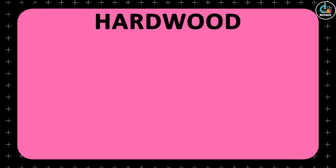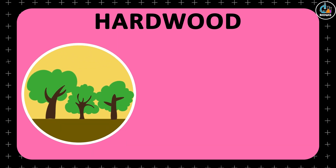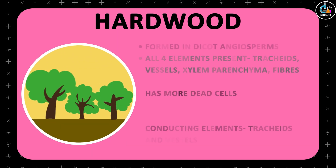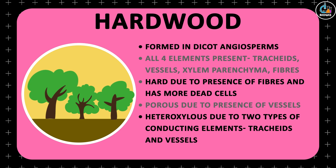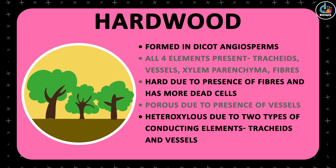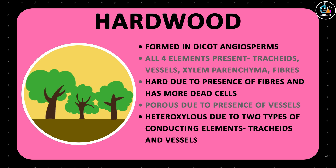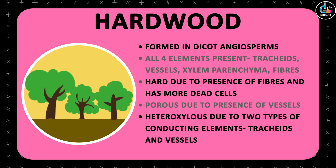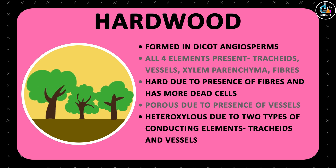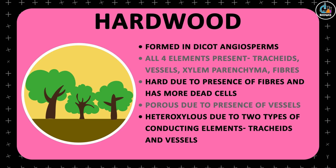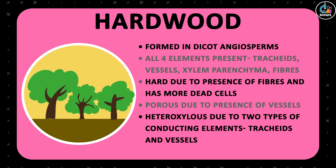In angiosperms, the wood contains all four types of elements: tracheids, vessels, xylem parenchyma, and xylem fibers. The presence of xylem fibers makes this wood relatively hard compared to gymnospermic softwood. Hence it is called hardwood.